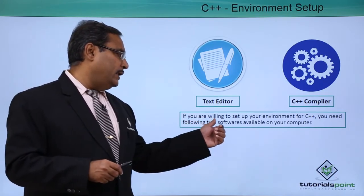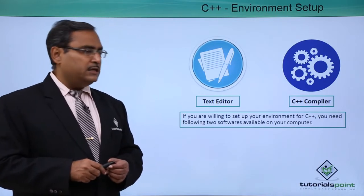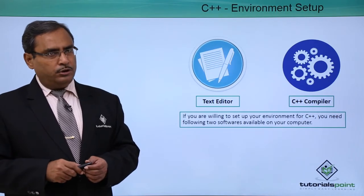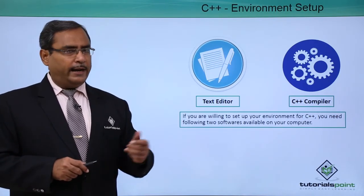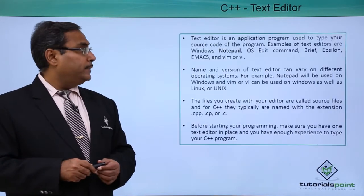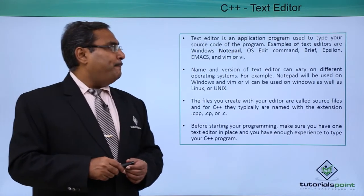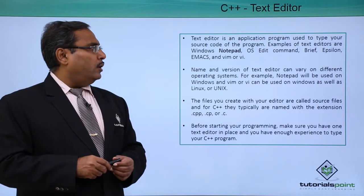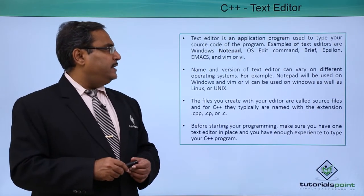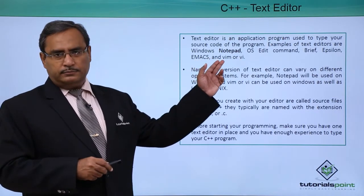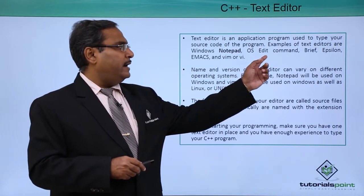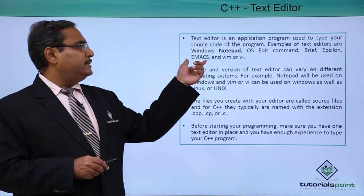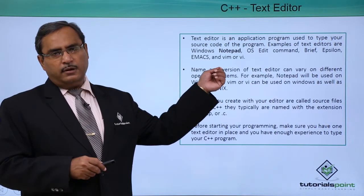If you are willing to set up your environment for C++ you need to have the following two softwares available on your computer: one is the editor and the other is the C++ compiler. A text editor is an application used to type your source code. Examples of text editors are Windows Notepad, OS edit command, Brief, Epsilon, Emacs, and Vim or Vi.